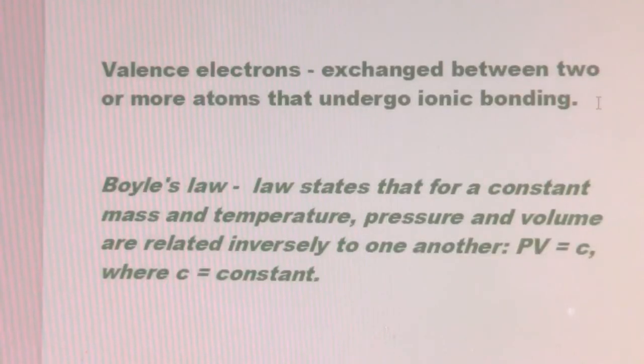Valence electrons are exchanged between two or more atoms that undergo ionic bonding. Boyle's law states that for a constant mass and temperature, pressure and volume are related inversely to one another: PV = c, where c = constant.